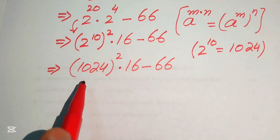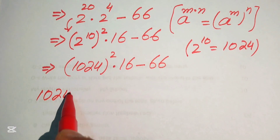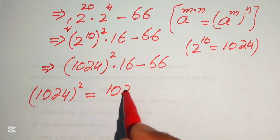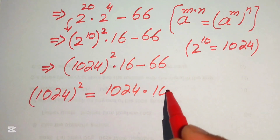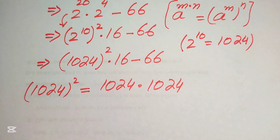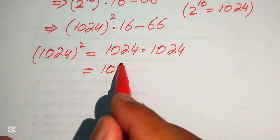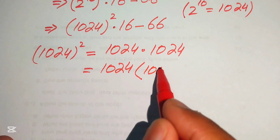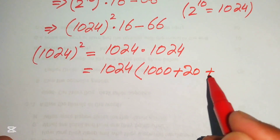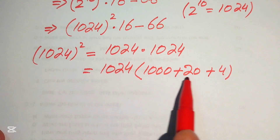We need to find the value of 1024 squared, so we write 1024 squared equals 1024 multiplied by 1024. To simplify the multiplication, we break 1024 as 1000 plus 20 plus 4.